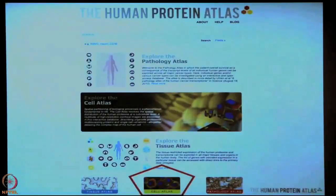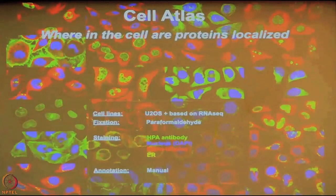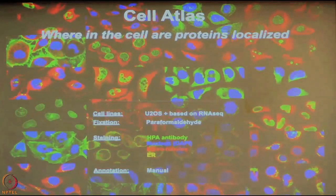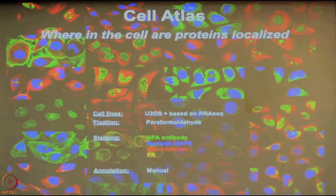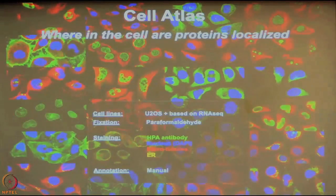The next part is the Cell Atlas, or the sub-cell atlas, and this is based on immunofluorescence. Here we use RNA-seq to select the cell line which has the highest expression of each gene, and we also use the U2-OS cell line as a standard throughout all antibodies and genes. This part also involves manual annotation, though we are working on more automated annotation.